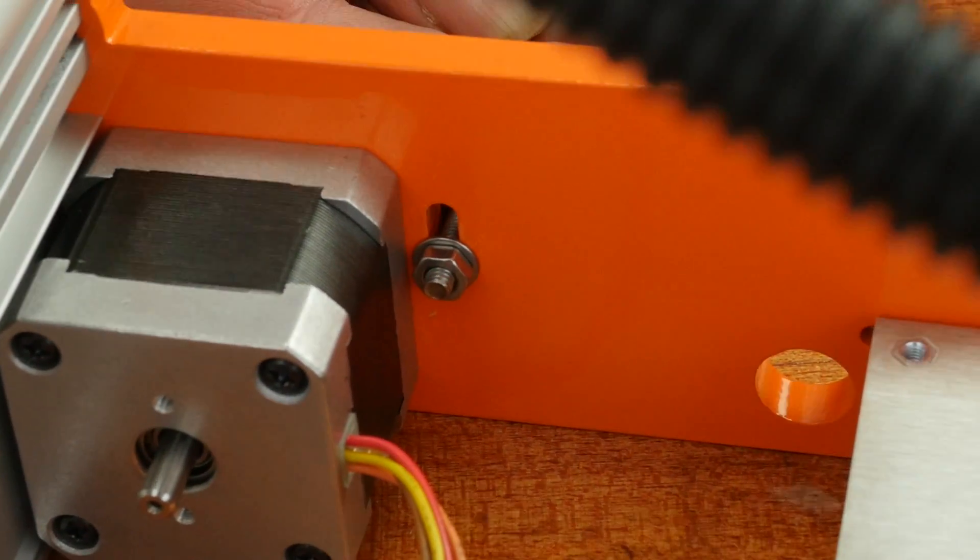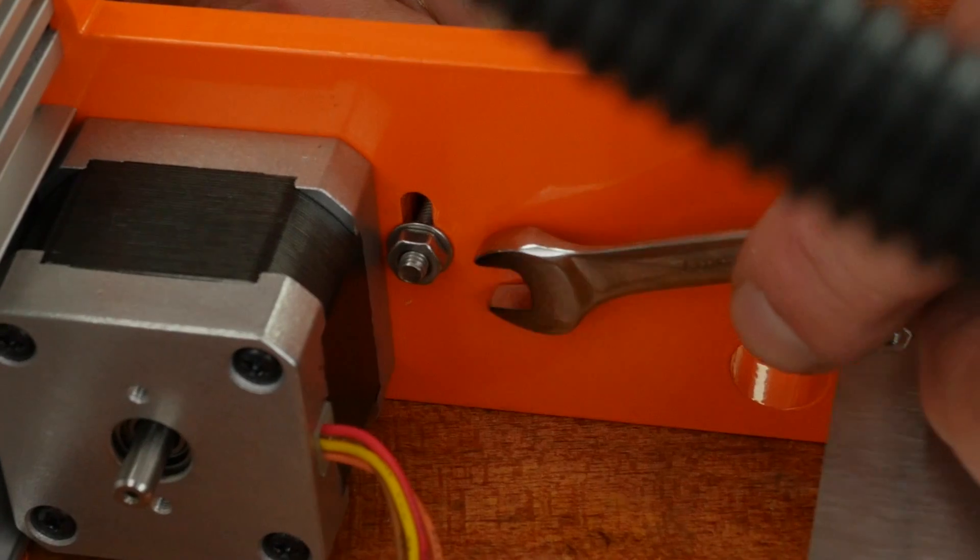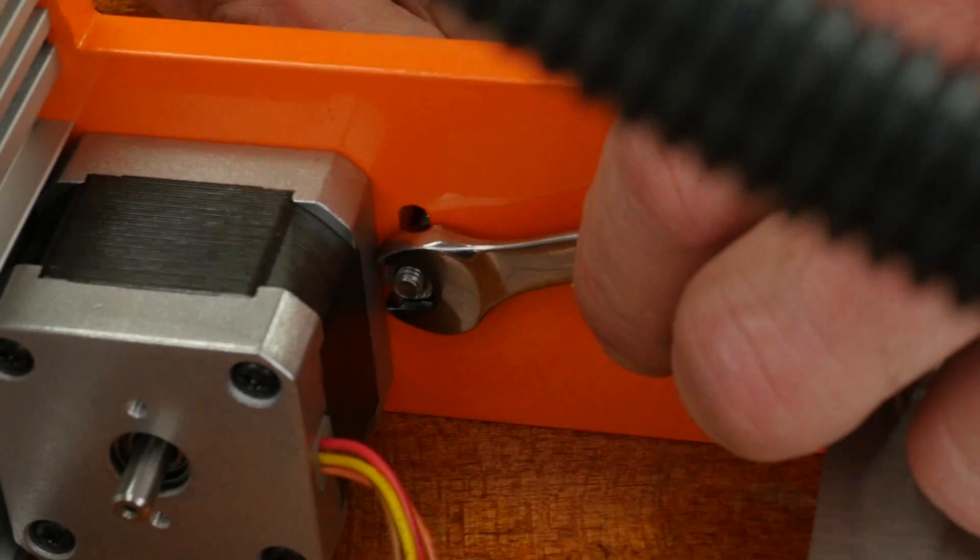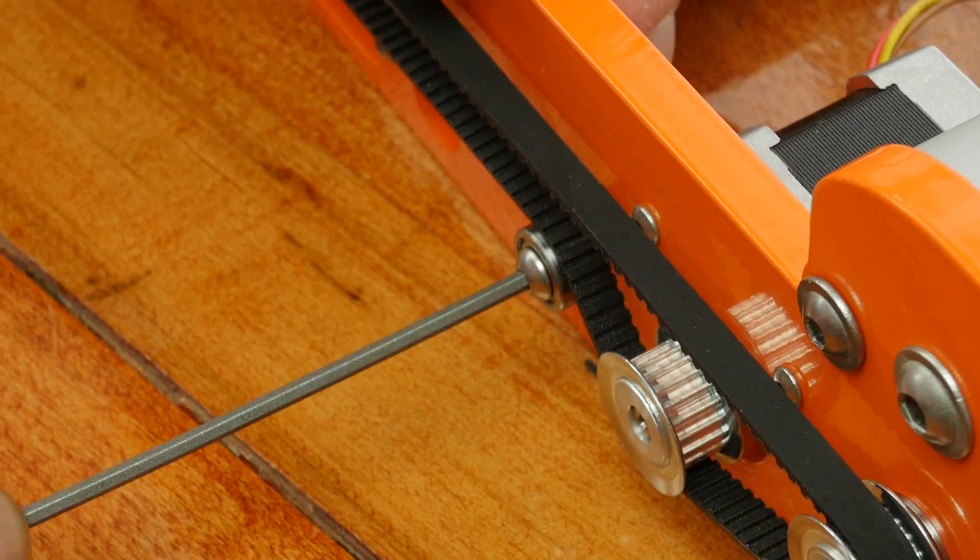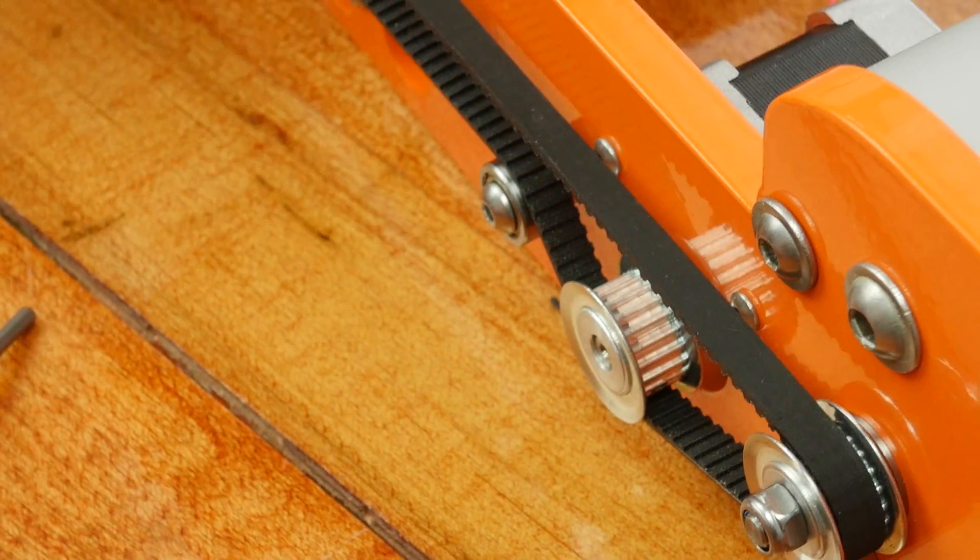Next, we'll set the tension on the belt. Using a 10mm open end wrench, grasp the nut on the rear of the plate. Using a 3mm Allen wrench, tighten the screw.